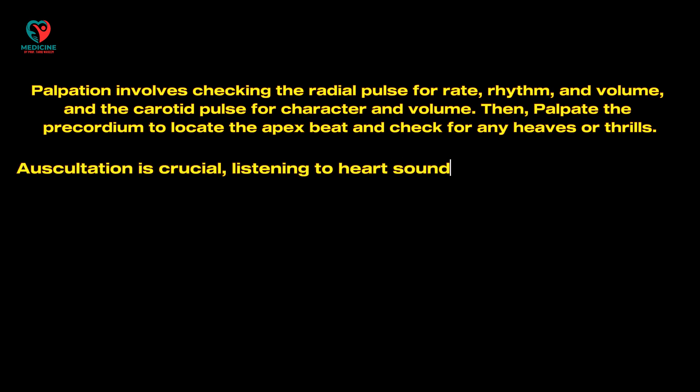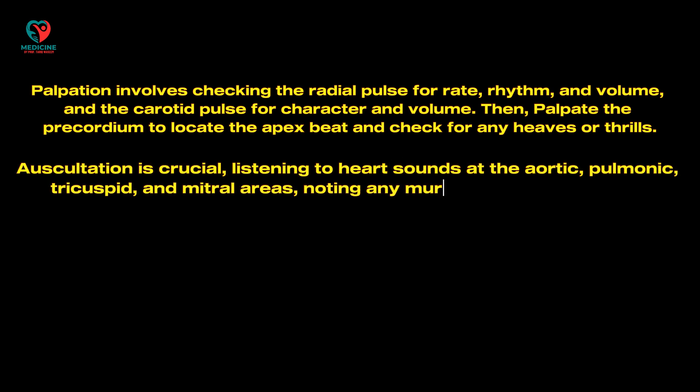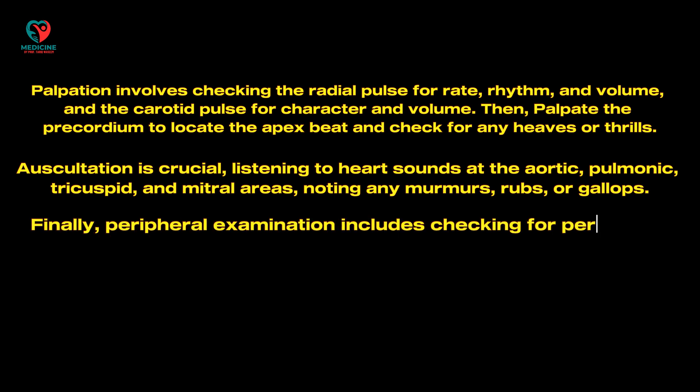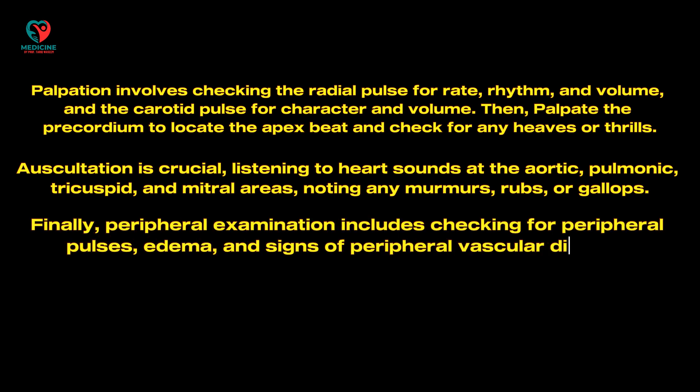Auscultation is crucial — listening to heart sounds at the aortic, pulmonic, tricuspid, and mitral areas, noting any murmurs, rubs, or gallops. Finally, peripheral examination includes checking for peripheral pulses, edema, and signs of peripheral vascular disease.